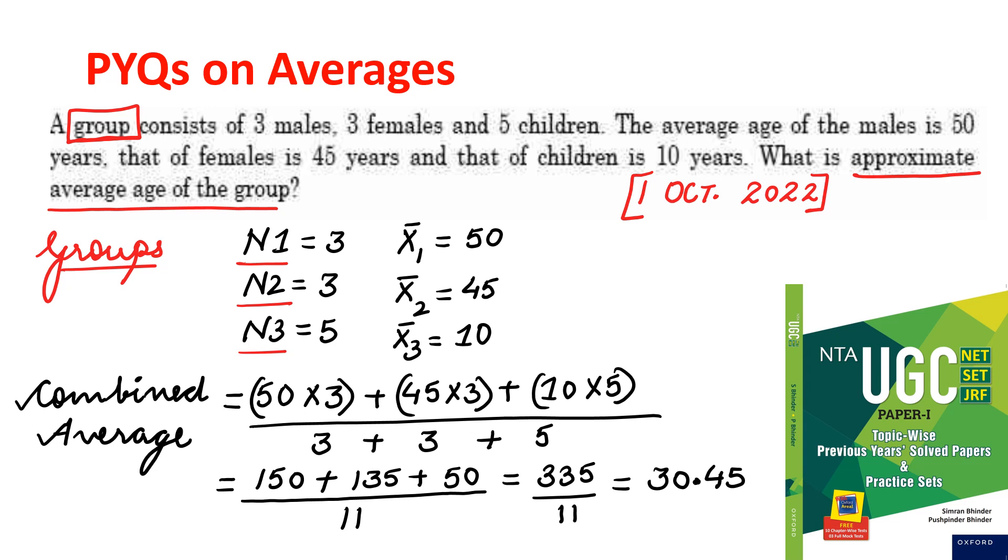So 50 into 3 plus 45 into 3 plus 10 into 5, divided by number of males plus females plus children. So we get the answer as 30.45. So this is easy. This is your UGC net final exam question from 2022. So need not to worry. Prepare such type of questions.